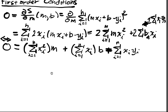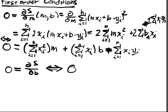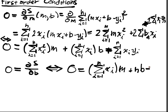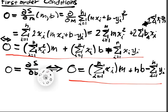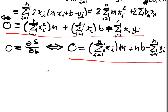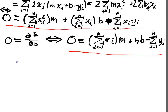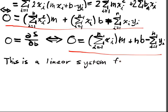That was the first order condition from the partial with respect to M. Similarly, taking the partial with respect to B gives: 0 equals the sum of Xi times M, plus N times B, minus the sum of Yi. These two conditions must be satisfied simultaneously. Together, they form a linear system for M and B.